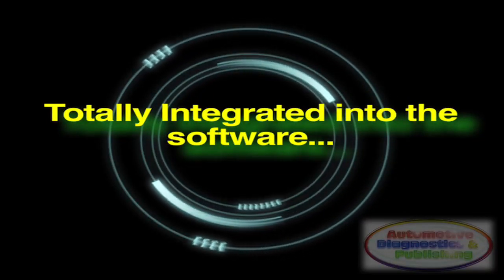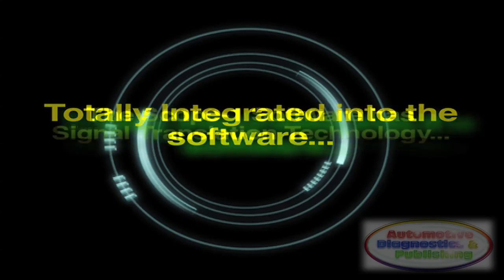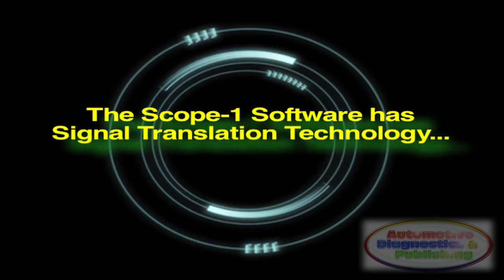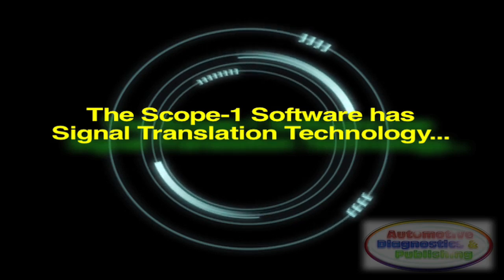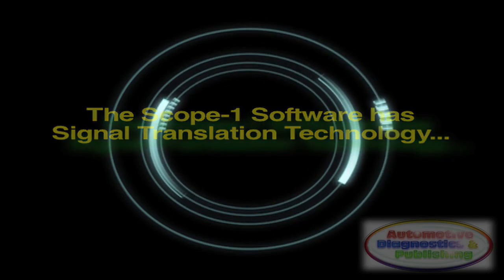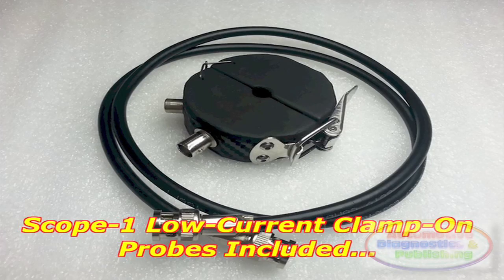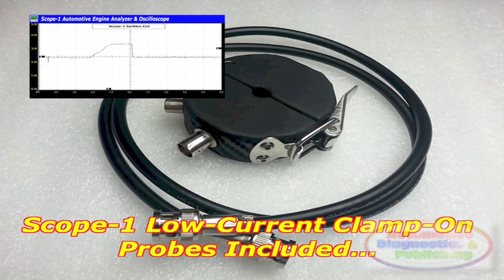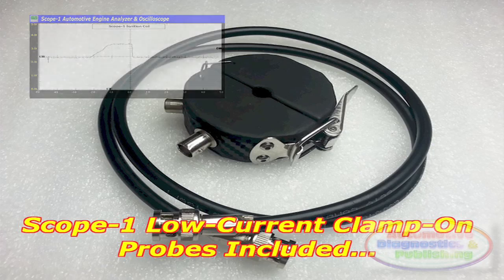But what exactly does this mean? It means that if you don't want the hassle of reading the actual complex waveform, fine, just have the Scope 1 software do it for you. The Scope 1 integrated software is the only automotive engine analyzer and oscilloscope that translates the signal waveform for you and can detect all kinds of issues.